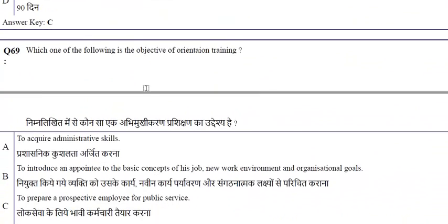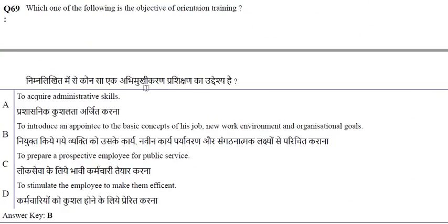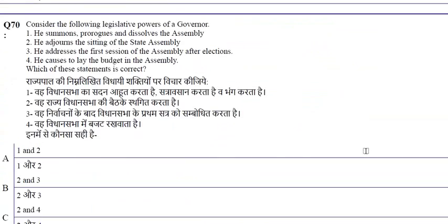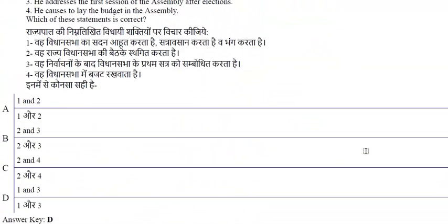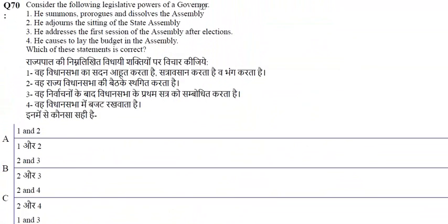The objective of orientation training is to introduce an appointee to the basic concepts of his job, new work environment, and organizational goals. The governor's legislative powers include: summoning, proroguing and dissolving the assembly (option 1), and addressing the first session of the assembly after election (option 3). The right option is 1 and 3.